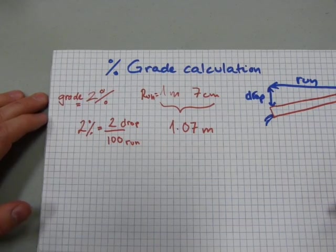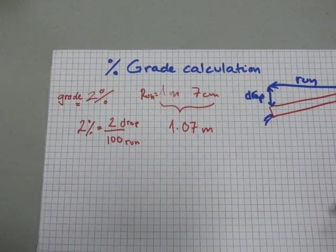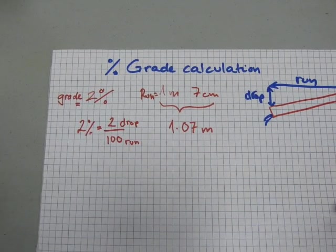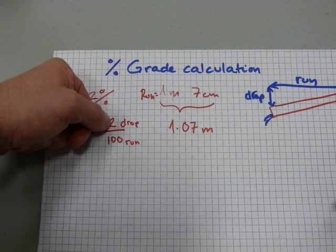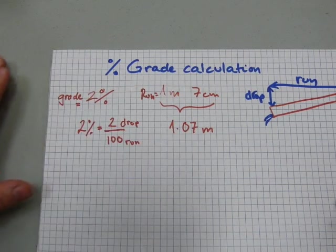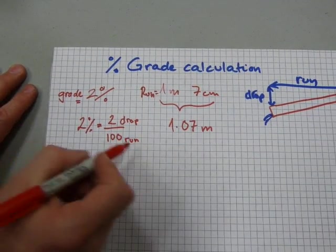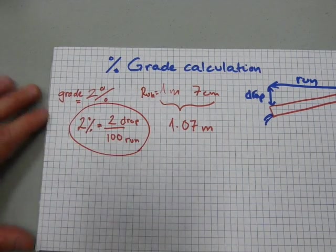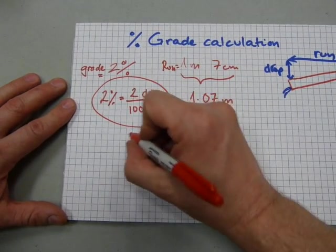Referring back to this drawing, the run and the drop. The drop is always the numerator, and the run is always down here. It could be 2 mile over 100 miles, or 2 kilometers over 100 kilometers, as long as the unit of measurement in the numerator and denominator are the same. That's the meaning of this grade number.